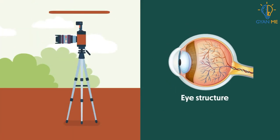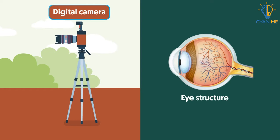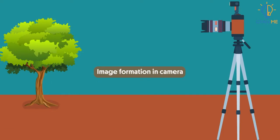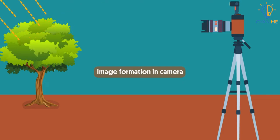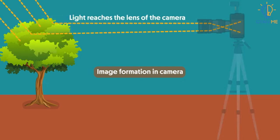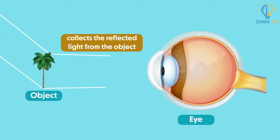It works just like a digital camera. Before understanding more about the eye, recall how a camera works. We have already seen this in detail, but let's quickly recall it. When light falls on any object, it absorbs some amount of rays and reflects the rest. This reflected light reaches the lens of the camera, which forms the image of the object. The same system is in the eye — it also collects the reflected light from the object and forms its image.